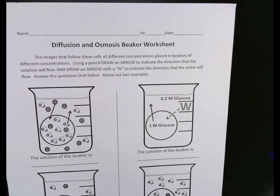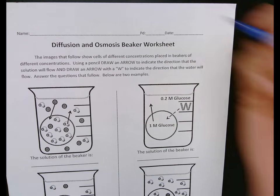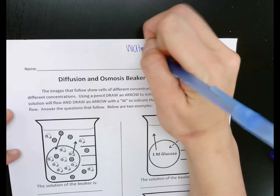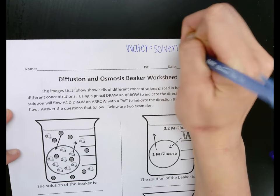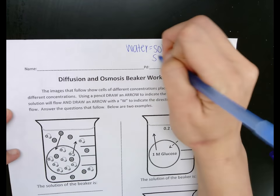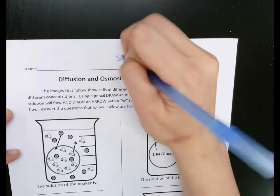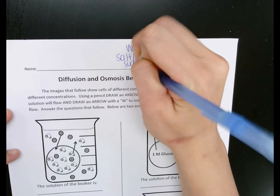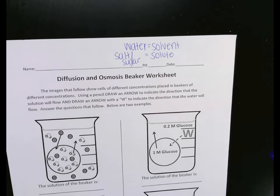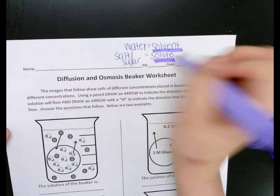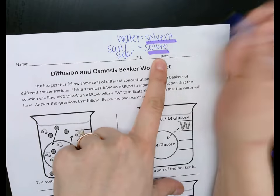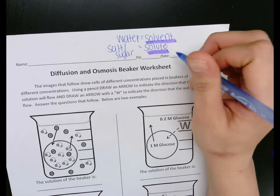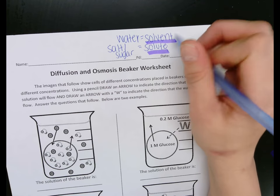So just to go over a couple things: water is known as the universal solvent. That's a great way to remember that water is always going to be referred to as the solvent, and all the solute is, is salt or sugar — in other words, the other stuff that is in the beaker. And I want you to understand that solute is not the same thing as solution. The solution is when solute is dissolved in the solvent.